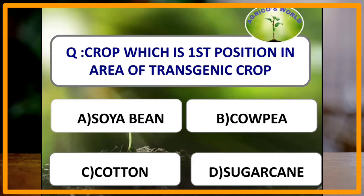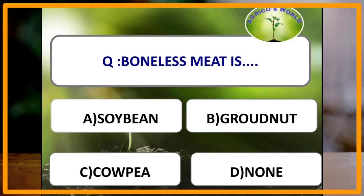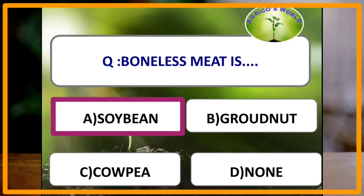Which of the following crop is the transgenic crop which is in first position when we consider according to area? The answer is soya bean. Which of the following crop is considered as boneless meat? The answer is soya bean, and cowpea is known as vegetable meat.